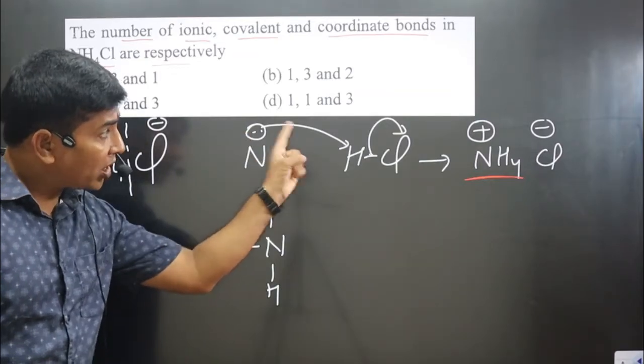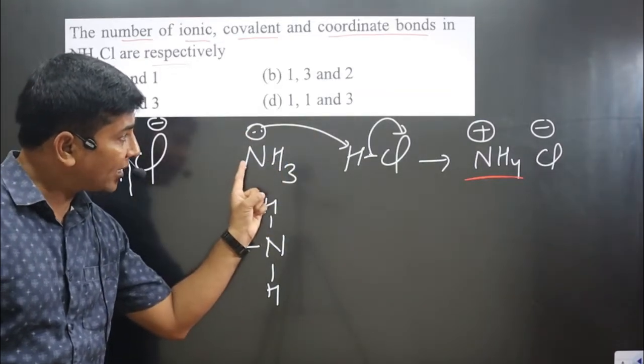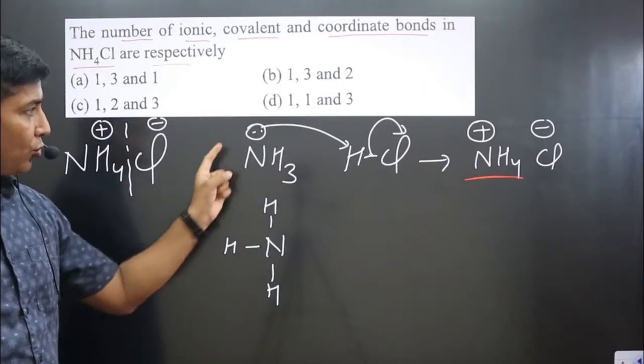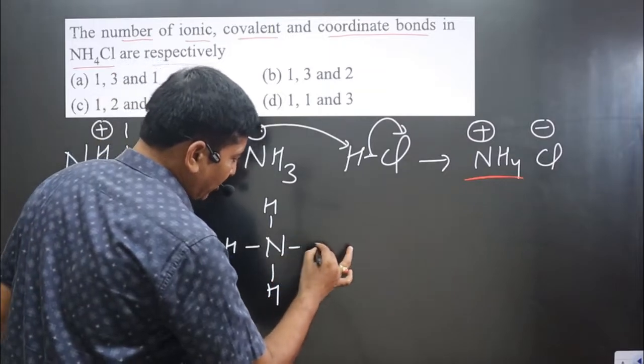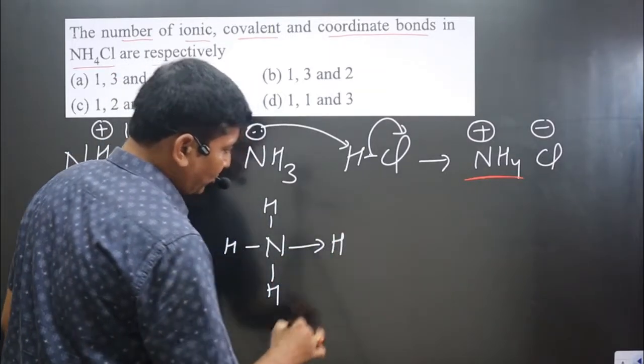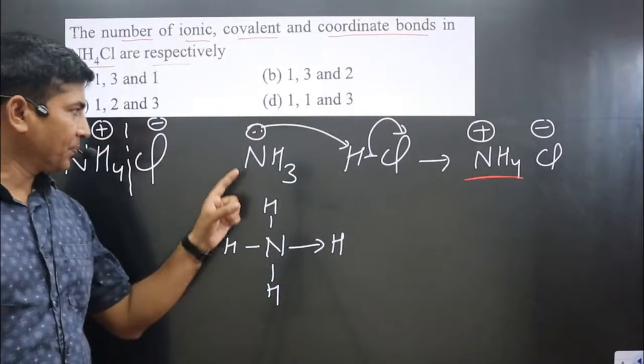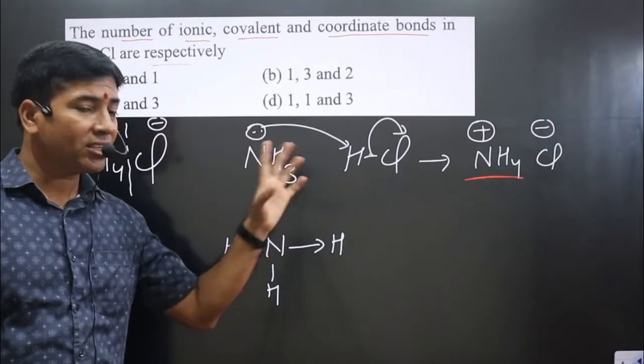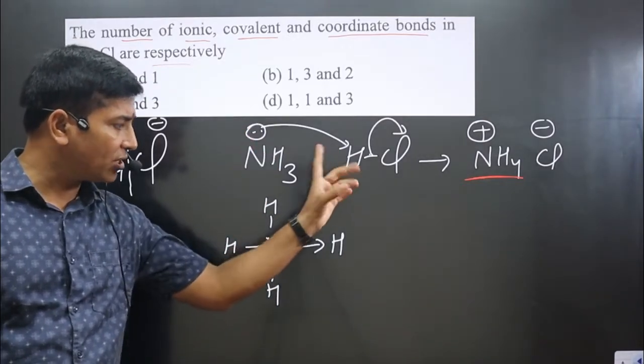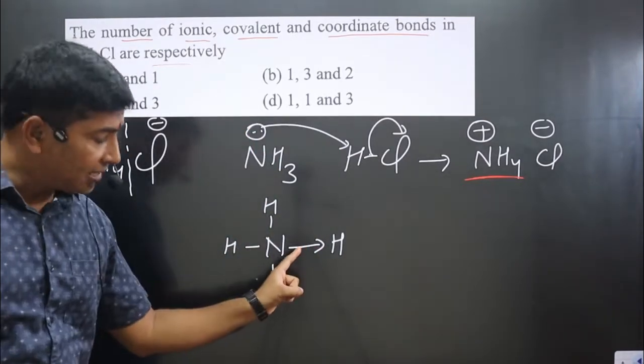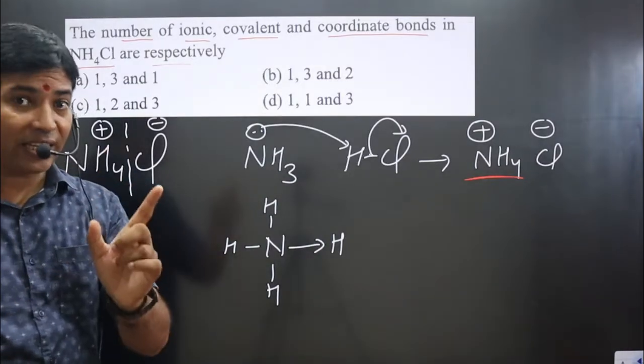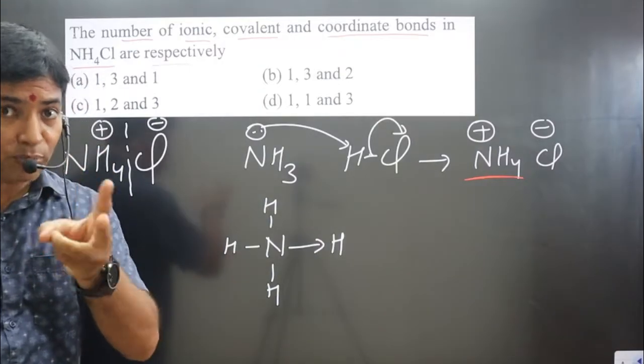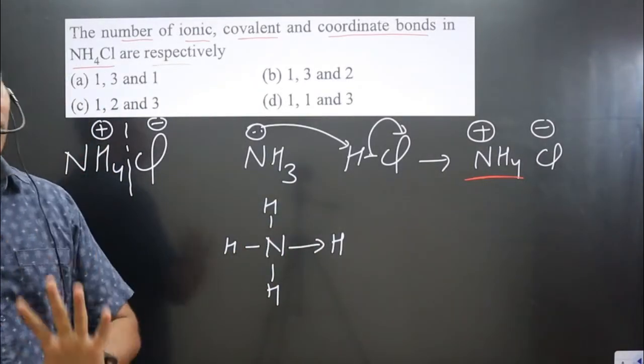Transfer of electron pair is taking place from one atom to another atom. It is a kind of sharing of electrons, so we can see it is a coordinate bond. This nitrogen is forming a coordinate bond with this hydrogen because it is donating its lone pair of electrons to this hydrogen. So electron density is moving from this direction to that direction. A coordinate bond is a special type of covalent bond in which sharing of electrons is taking place from one atom to another atom, not mutual sharing.